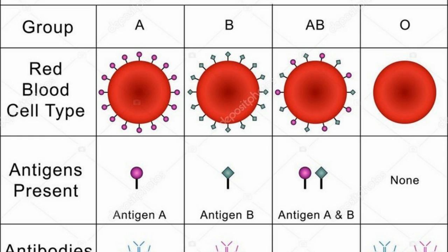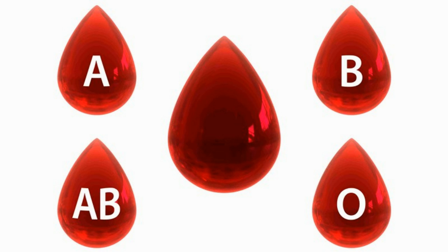The human blood is divided into four types: A, B, AB, and O. Whether a person has A, B, AB, or O blood group is determined by a short chain of sugars covalently bonded to membrane lipids and proteins of the RBC.